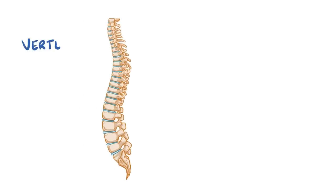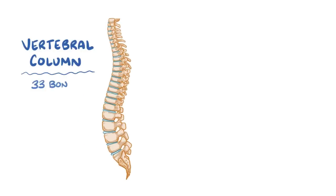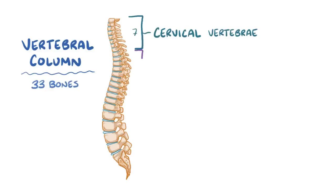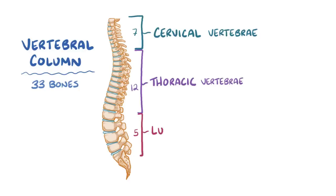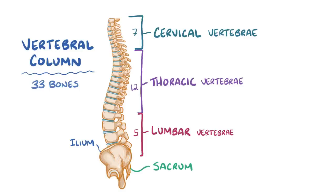In the healthy adult, the vertebral column is made up of 33 bones. From top to bottom, the first 7 bones are the cervical vertebrae. The next 12 are the thoracic vertebrae, and the last 5 are the lumbar vertebrae. Below that is a bone called the sacrum, which is attached to the pelvic bone on either side, called the ilium, and where they meet is the sacroiliac joint. Below the sacrum is a tiny bone called the coccyx, or tailbone.